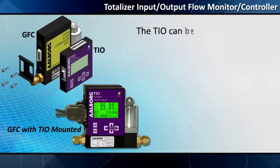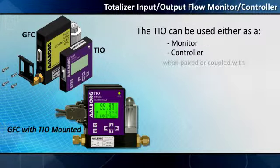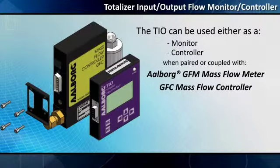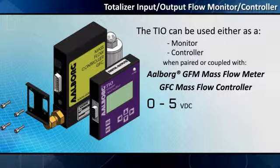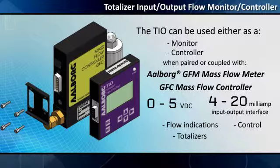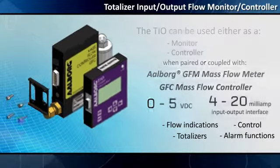The TIO can be used either as a monitor or a controller when paired with an Alborg GFM mass flow meter or GFC mass flow controller. It is equally versatile with any third-party device equipped with a 0 to 5 VDC and/or a 4 to 20 milliamp input-output interface where flow indications, control, and totalizer or alarm functions are required.